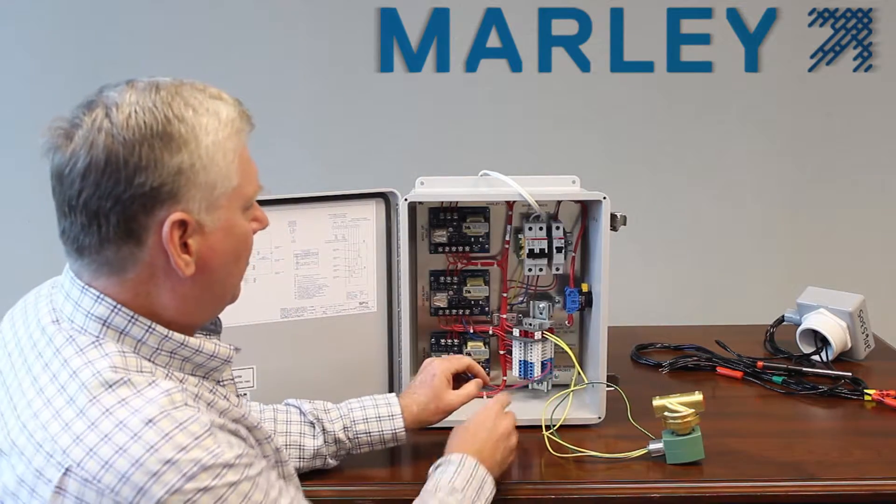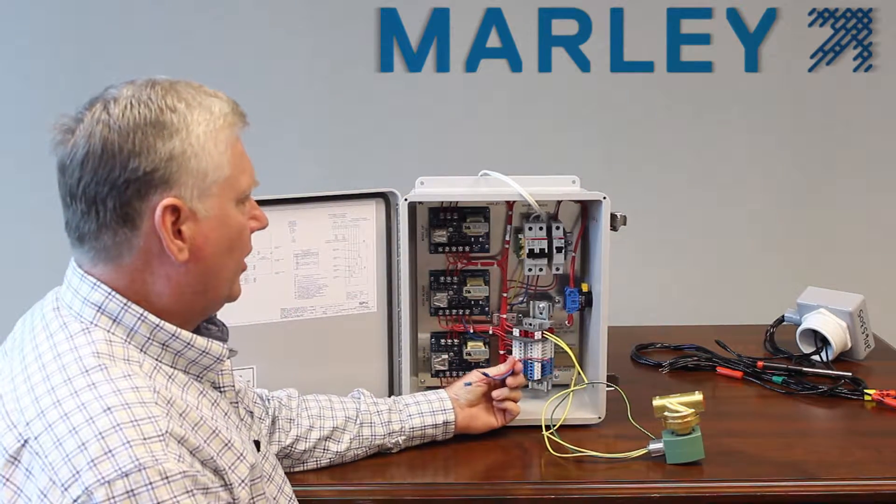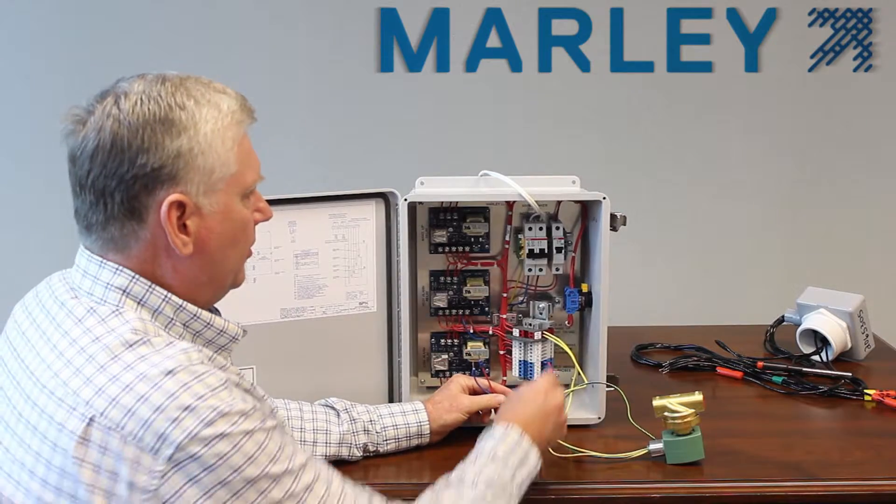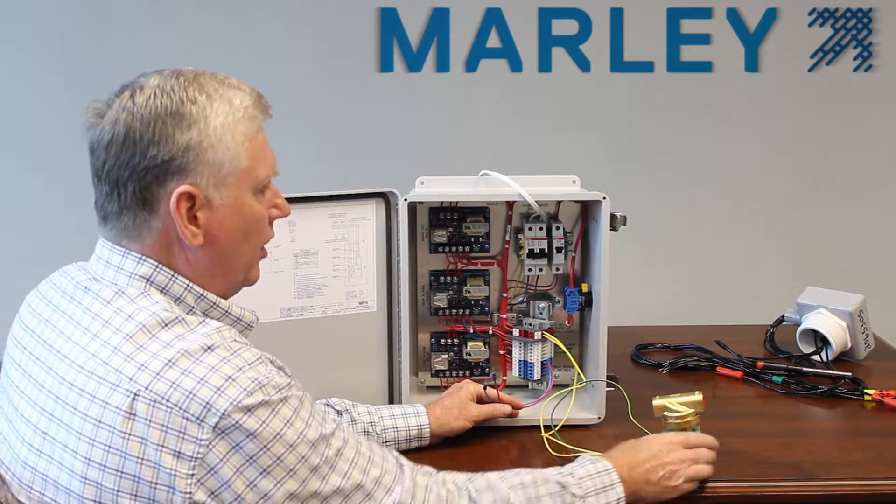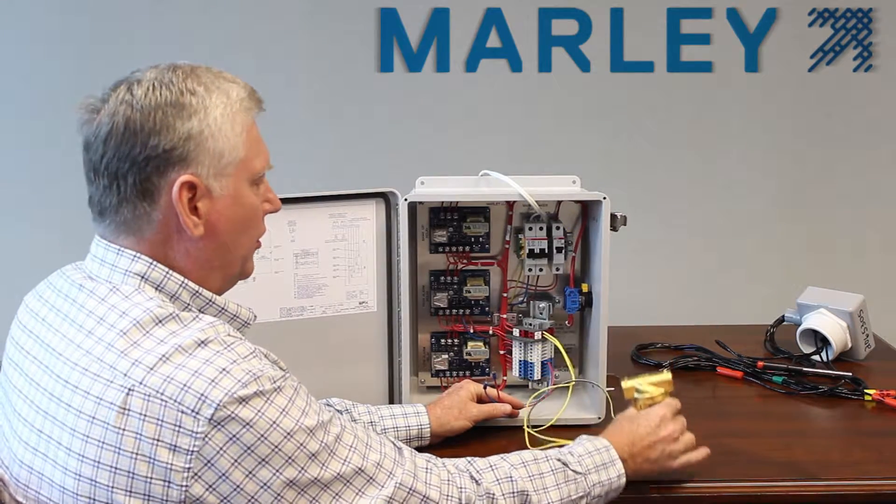So what I did, I still have my jumpers in here, and I went ahead and wired up a 120 volt solenoid to my red terminal blocks 2A and 4A, and here's the solenoid right here.